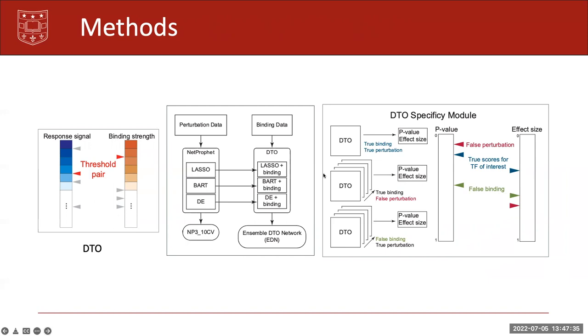So we sequentially replace the perturbation data of the TF of interest with the perturbation data of 100 other TFs. We run DTO on all 100 pairings and find the percentage of pairings that have more significant p-value and effect size than the true pairing. We do the same process with the binding data.